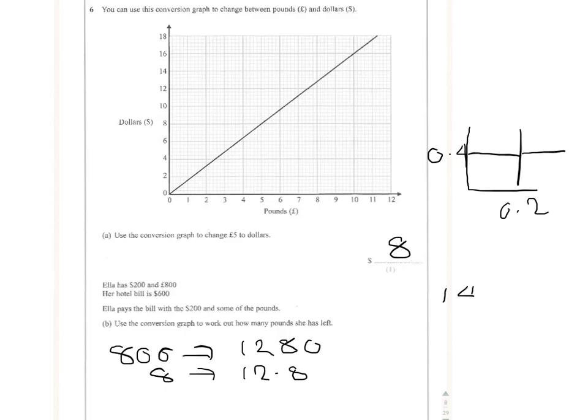So she's got fourteen hundred and eighty dollars altogether. And she pays off the bill of six hundred with her fourteen eighty. If we do fourteen eighty subtract six hundred, we get eight hundred and eighty.